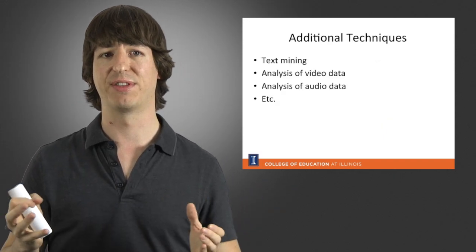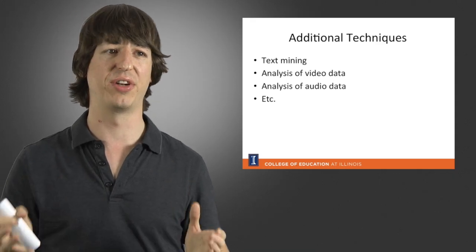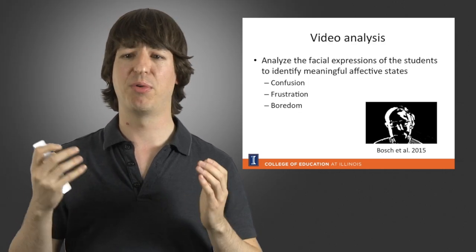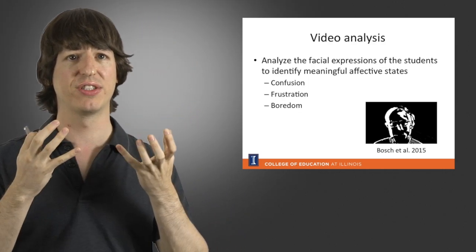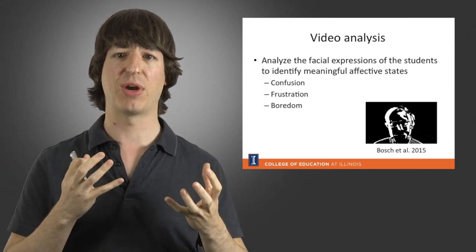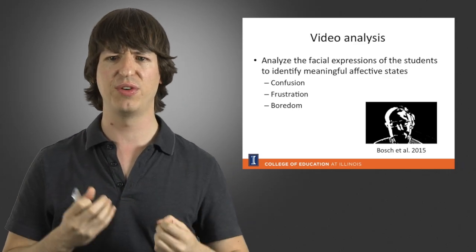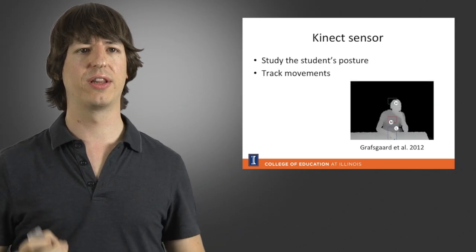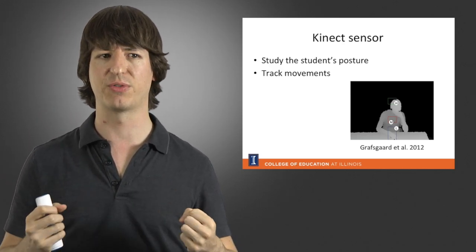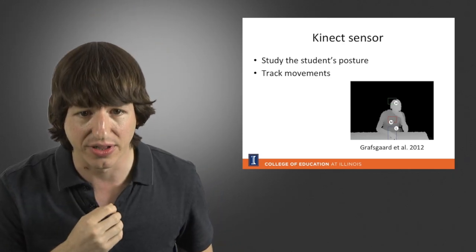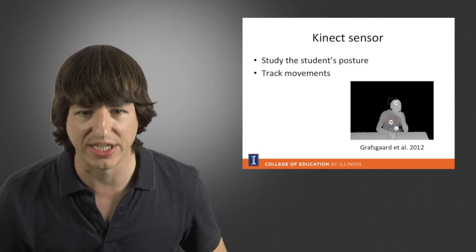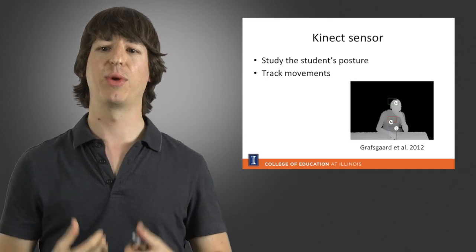This is just an overview of different types of techniques — there are many more, including text mining algorithms, analysis of video data, and analysis of audio data. For example, with video analysis we might look at the facial expressions of a student as they engage with learning content and use those expressions to identify whether a student is confused, frustrated, or bored. We could also look at data from Kinect sensors that give us information about the posture of the student, tracking their movement — for instance, whether a student leans in or leans backward, which may indicate greater engagement.